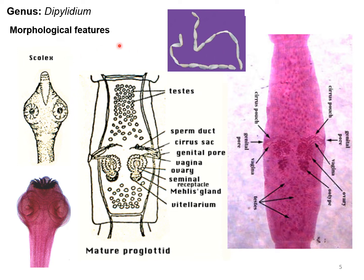Regarding the morphological features of Dipylidium: unlike Taenia solium or Taenia saginata, which can reach 3–10 meters, or Taenia saginata which can reach up to 25 meters, Dipylidium caninum is not that large. The adult tapeworm can be up to 50 centimeters long. There are four suckers on the body. The rostellum is retractable and bears three to four rows of small hooks; therefore this is also known as an armed scolex. The mature and gravid proglottids are elongated and oval-shaped.